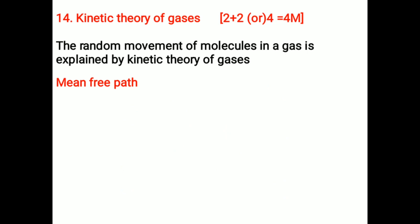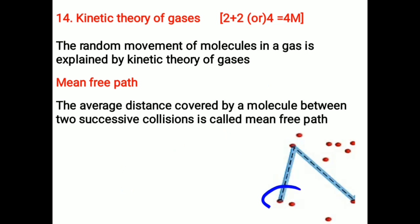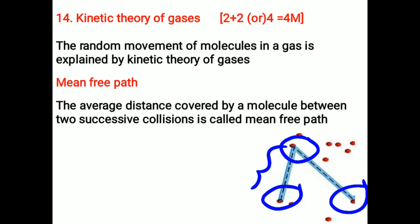Mean free path. Let us consider a molecule. These molecules collide with the first molecule during its motion. After that, it collides with the second molecule. Like this, it will make multiple collisions with different molecules during its motion. The average distance covered by a molecule between two successive collisions is called mean free path, denoted by lambda.